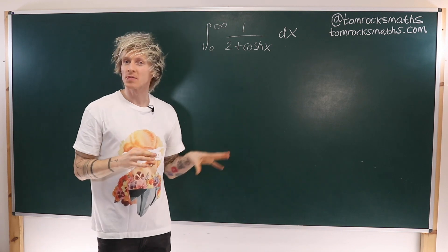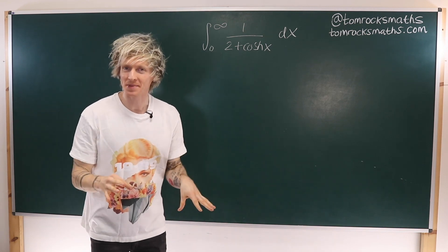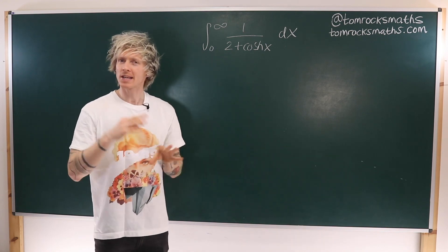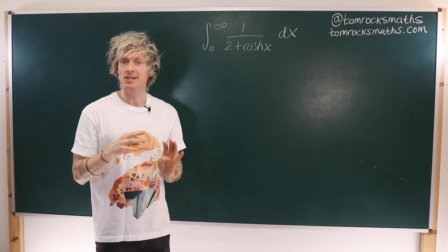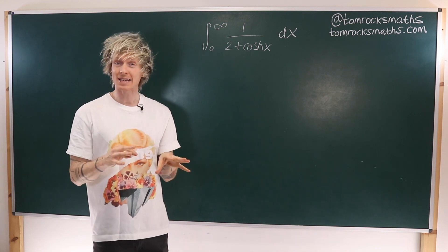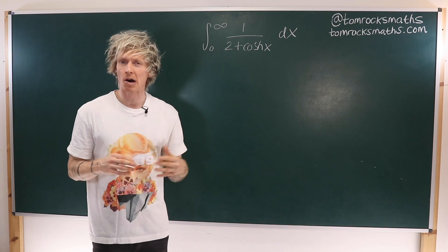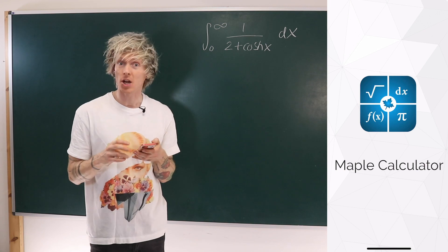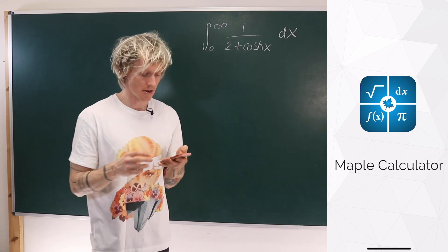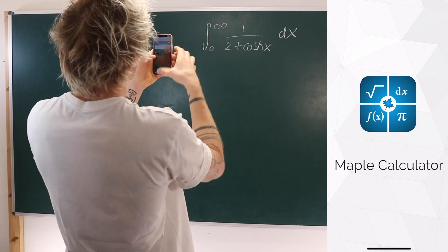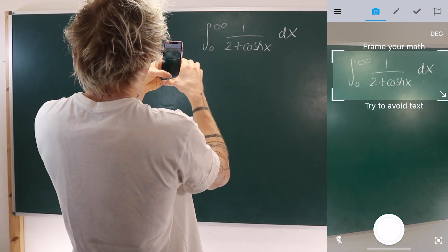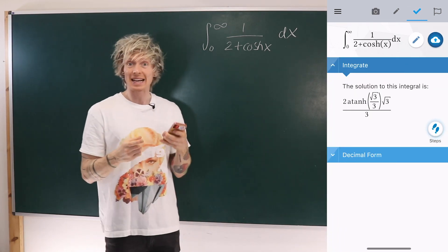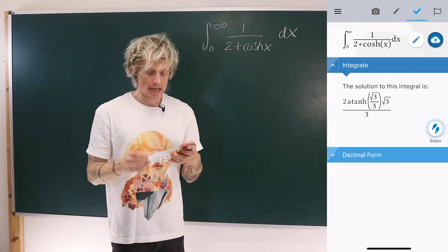Now this is going to involve a lot of steps, all of which I will talk through, but before I go through that let's just check what the answer should be, and for that I'm going to use the Maple calculator app on my phone. Opening the app on my phone and selecting the camera icon at the top of the screen will actually allow me to take a photo of the integral that we want to calculate.